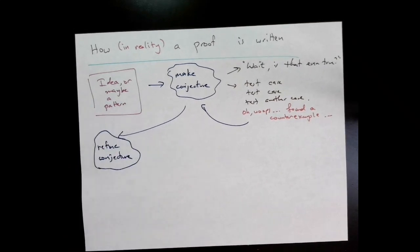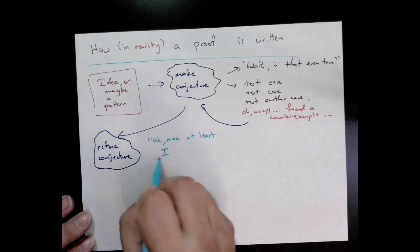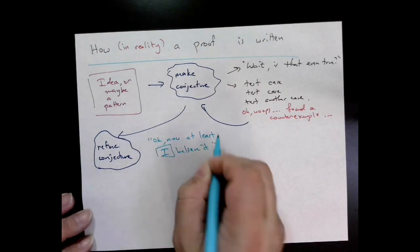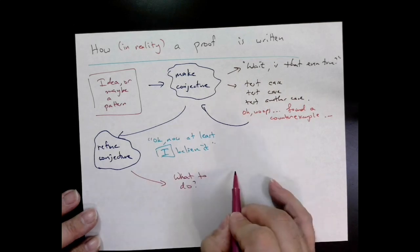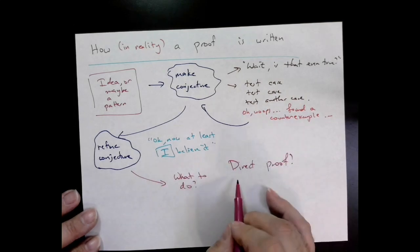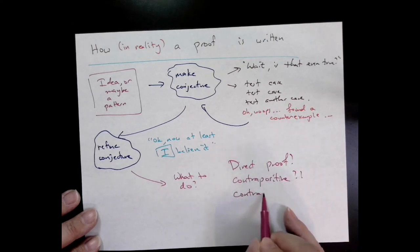Once we get a refined conjecture that we actually believe, then we try to prove it. But then there's a whole grab bag of tools that we're going to have when we actually try to prove something. That involves direct proof, contrapositive, contradiction, induction—there's all these different things that we'll do. You'll see those words again and again.